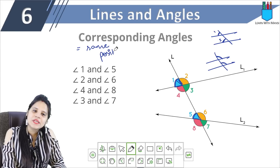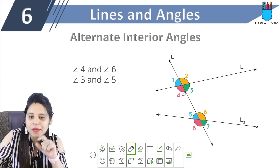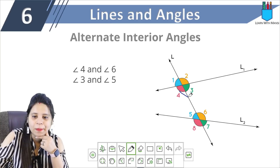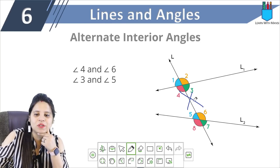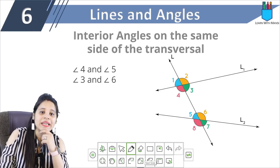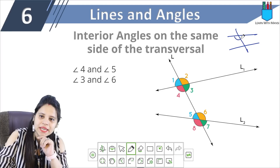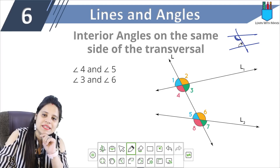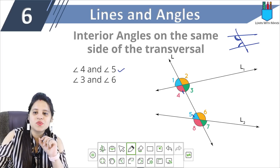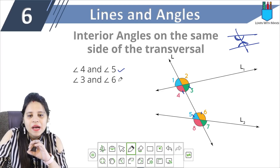Alternate interior angles: angles 4, 3, 5, and 6 are our interior angles. Now, alternate interior angles form two pairs: 4 and 6, and 3 and 5. So 4 and 6 are alternate interior angles, and 3 and 5 are alternate interior angles. Next, interior angles on the same side of the transversal: angle 4 and angle 5 are interior angles on the same side of the transversal, and angle 3 and angle 6 are also interior angles on the same side of the transversal.